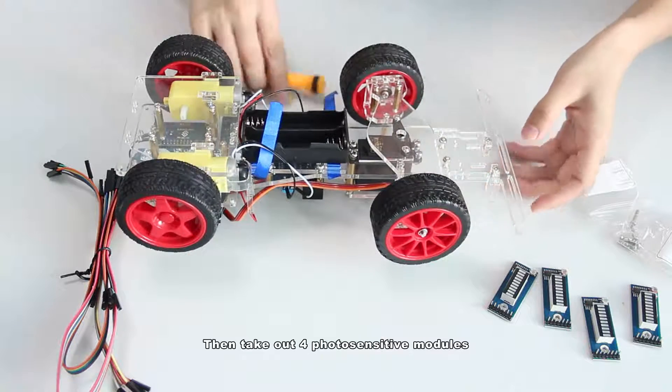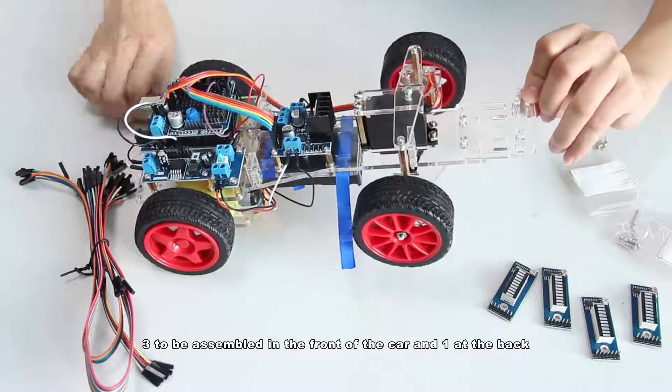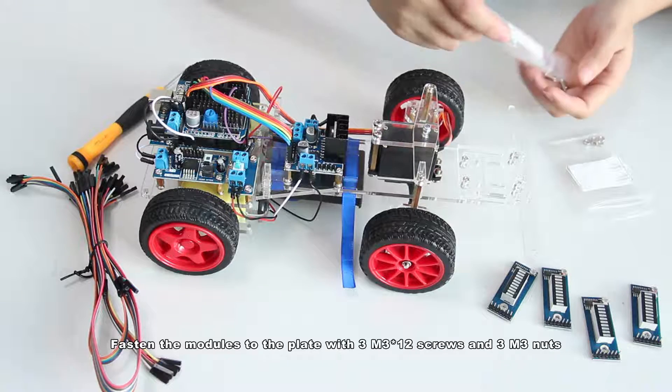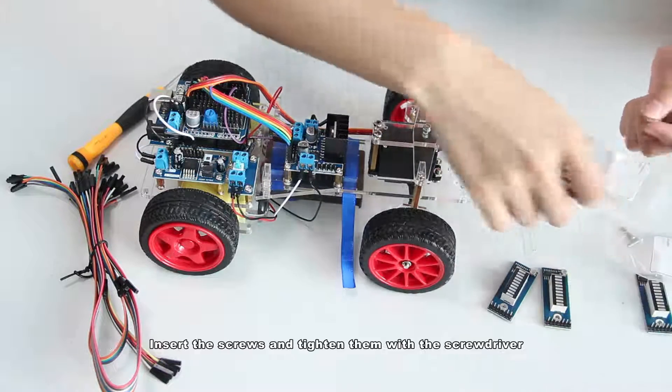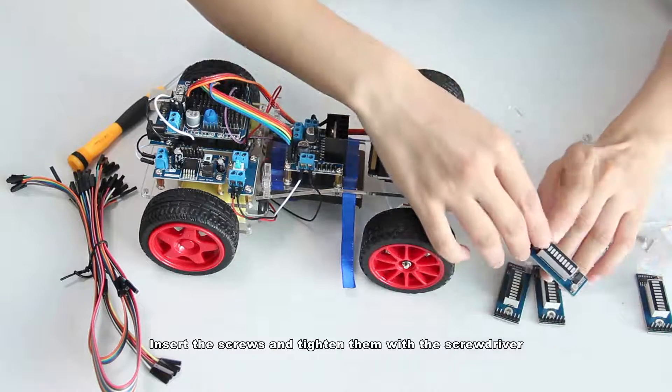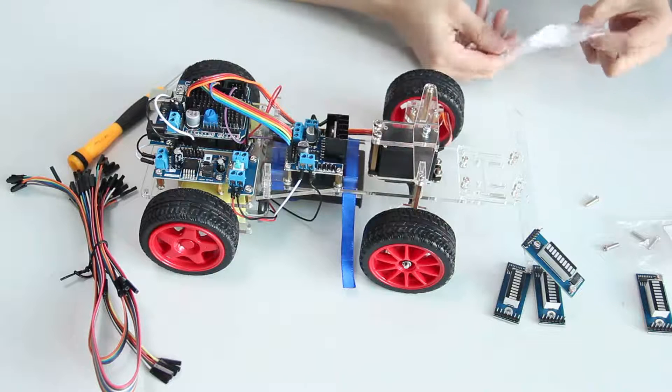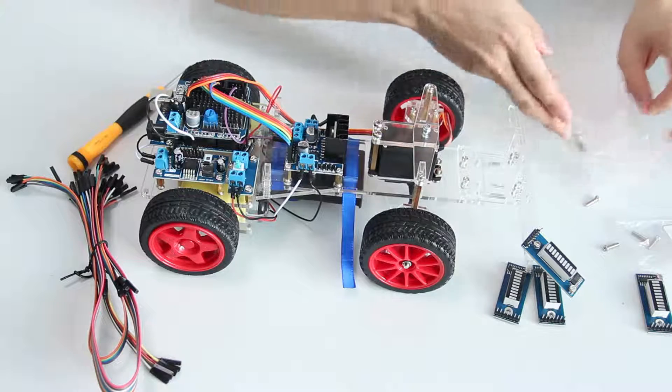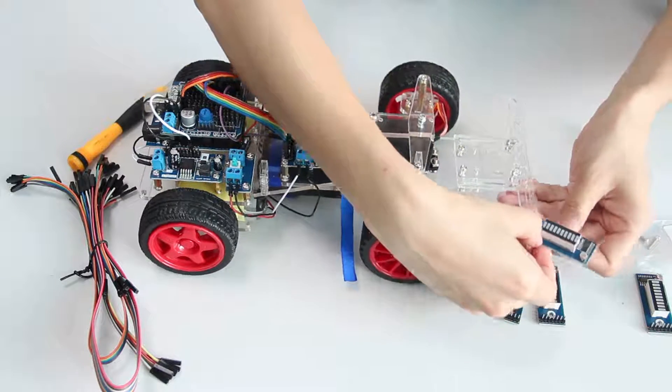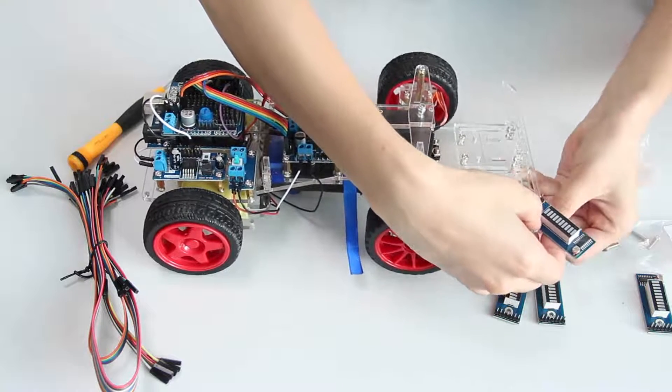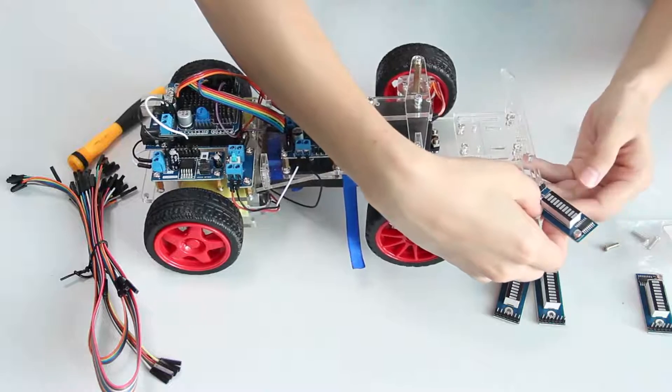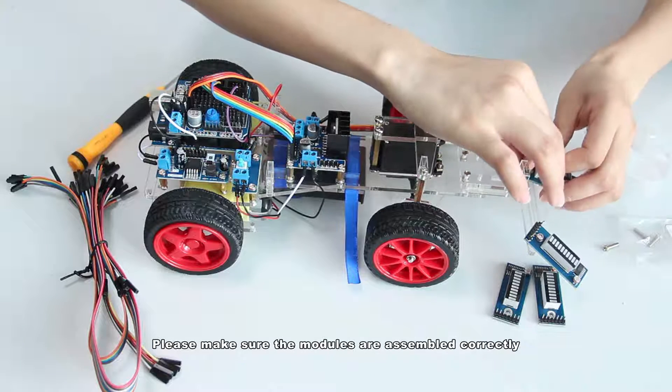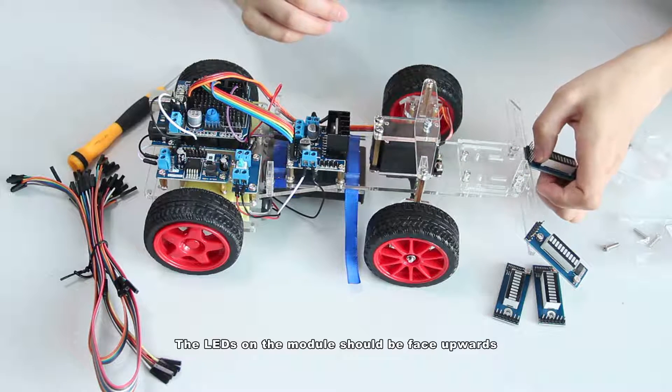Then take out four photosensitive modules, three to be assembled in front of the car and one at the back. Thrust the modules to the plate with three M3x12 screws and three M3 nuts. Insert the screws and tighten them with the screwdriver. Please make sure the modules are assembled correctly. The LEDs on the module should be phased upwards.